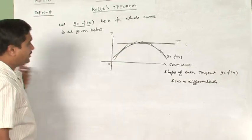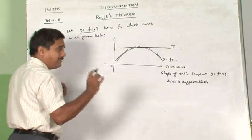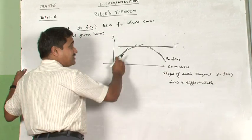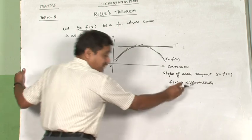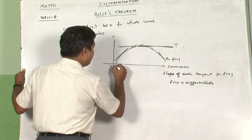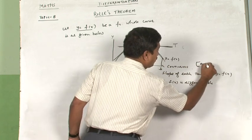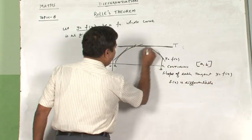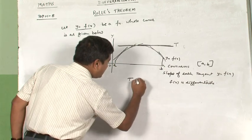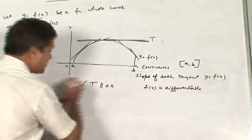Rolle, the mathematician, observed that if there is a curve which is continuous and has the possibility to construct tangents at every point — meaning it is differentiable — then if a function is continuous and differentiable in a specific closed interval [a, b], you can find a tangent parallel to the x-axis. That is the observation he made.